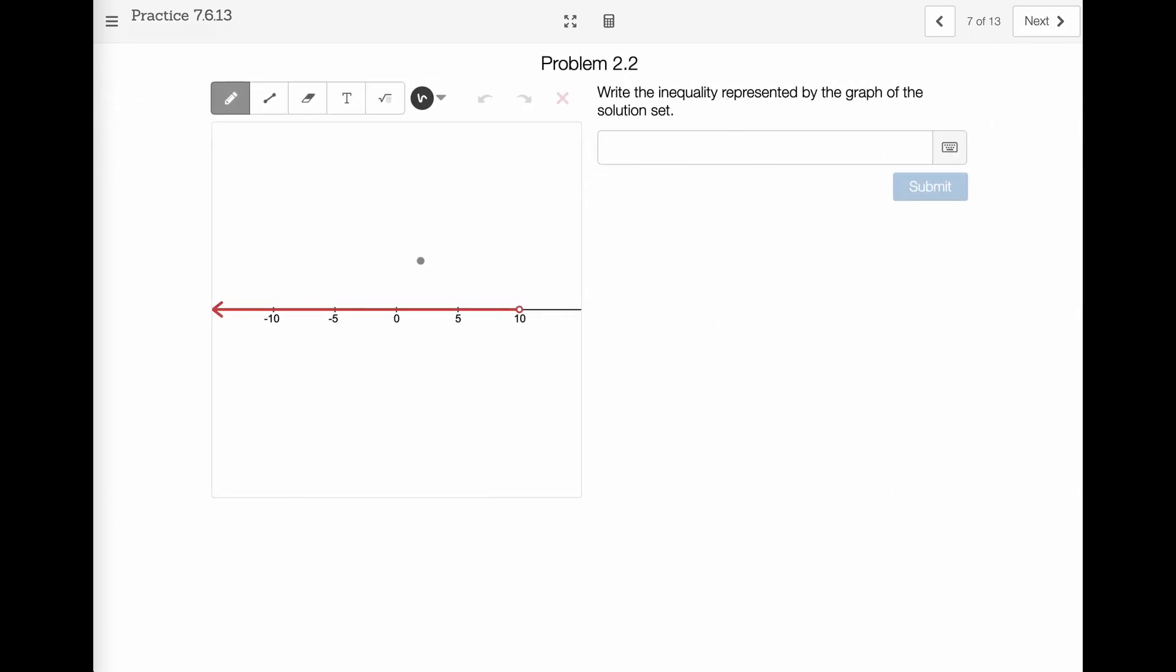Problem 2. So we're at the inequality. We're at 10, not included, and goes down. So less than. So x is less than and not included, not equal to, 10.